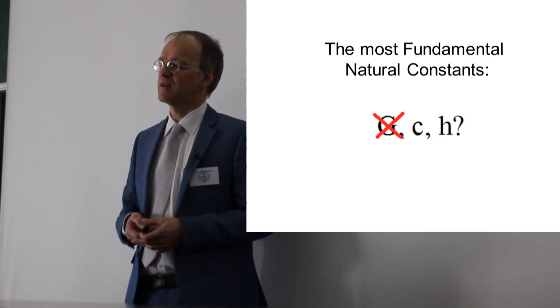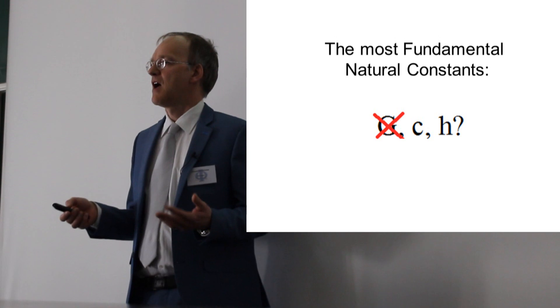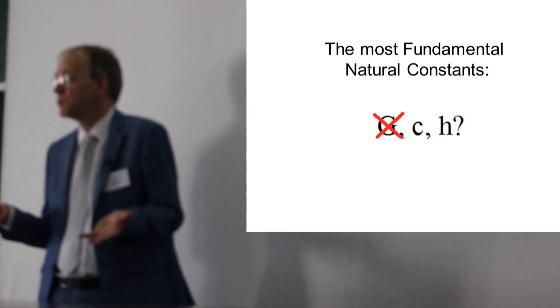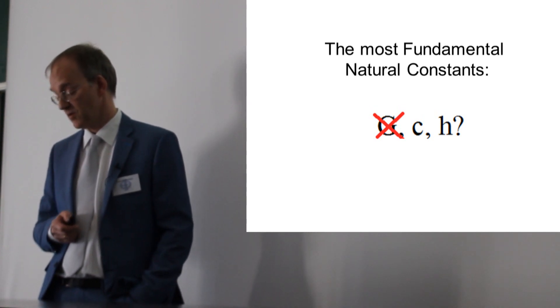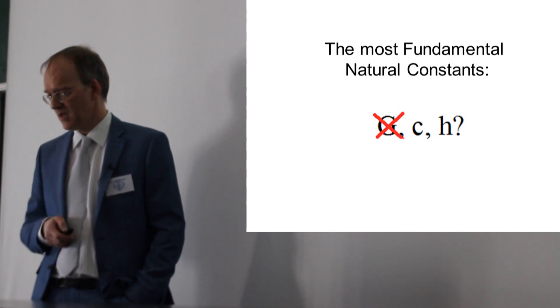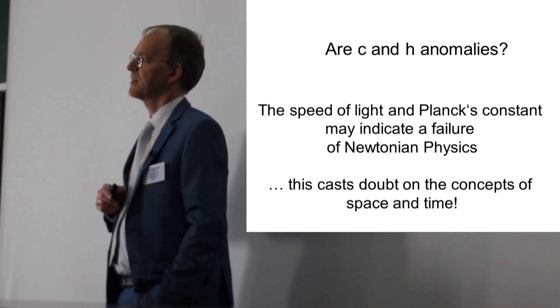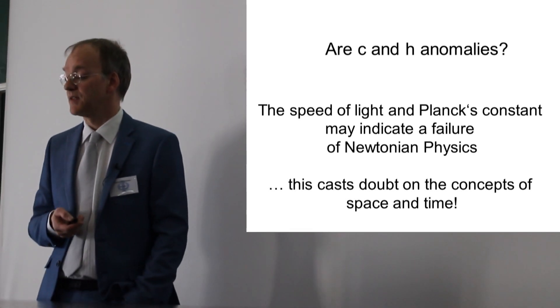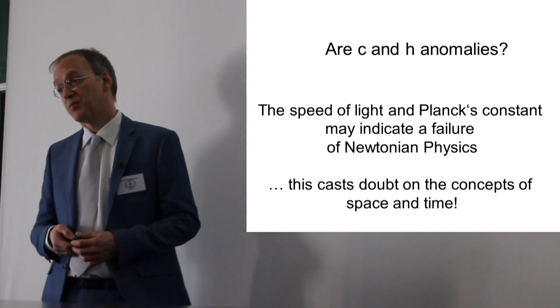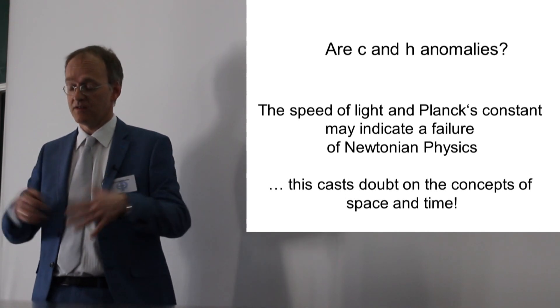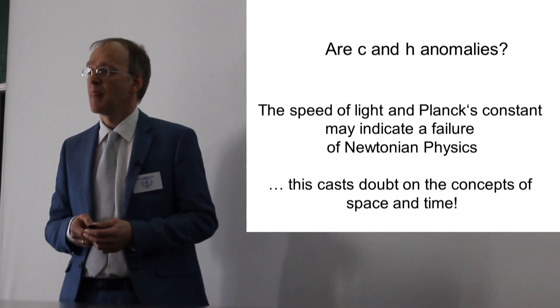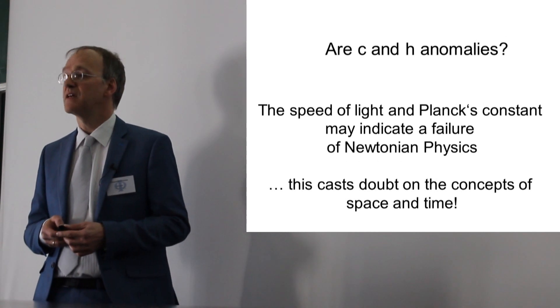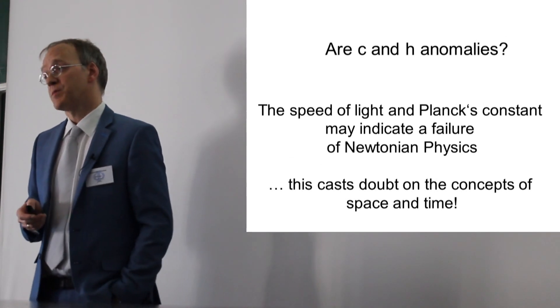We still have two fundamental constants left, C and H. You have to ask yourself, why do they exist? Couldn't it be possible that physics is done without any fundamental constants? Why two? Why not three? Why not another number? This is a problem. If you take the perspective of Thomas Kuhn, we could also think that C and H are anomalies that have shown up because there is an underlying problem in the model. The model is the very idea of space and time developed by Isaac Newton.